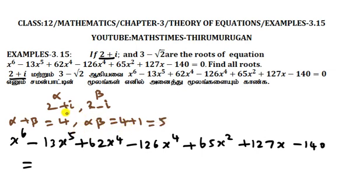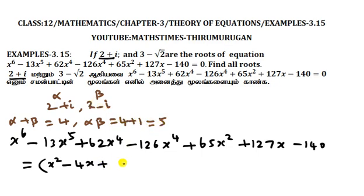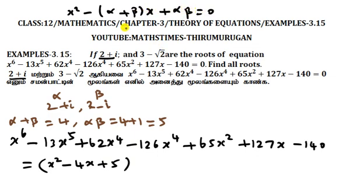Alpha into beta — product of the roots — equals 3. Applying the formula: x squared minus (alpha plus beta) x plus (alpha into beta) equals zero, where alpha plus beta is 4 and alpha times beta is 5.